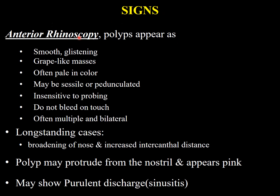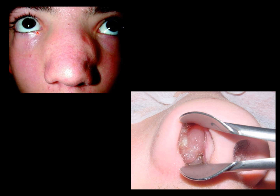On anterior rhinoscopy, smooth glistening grape-like masses may be seen, often pale in color, sessile or pedunculated. They are usually insensitive to probing and do not bleed on touch. They are often multiple and bilateral. In long-standing cases there will be broadening of the external nose and increased intercanthal distance. A polyp may protrude from the nostril and appear pink due to local irritation with purulent discharge.